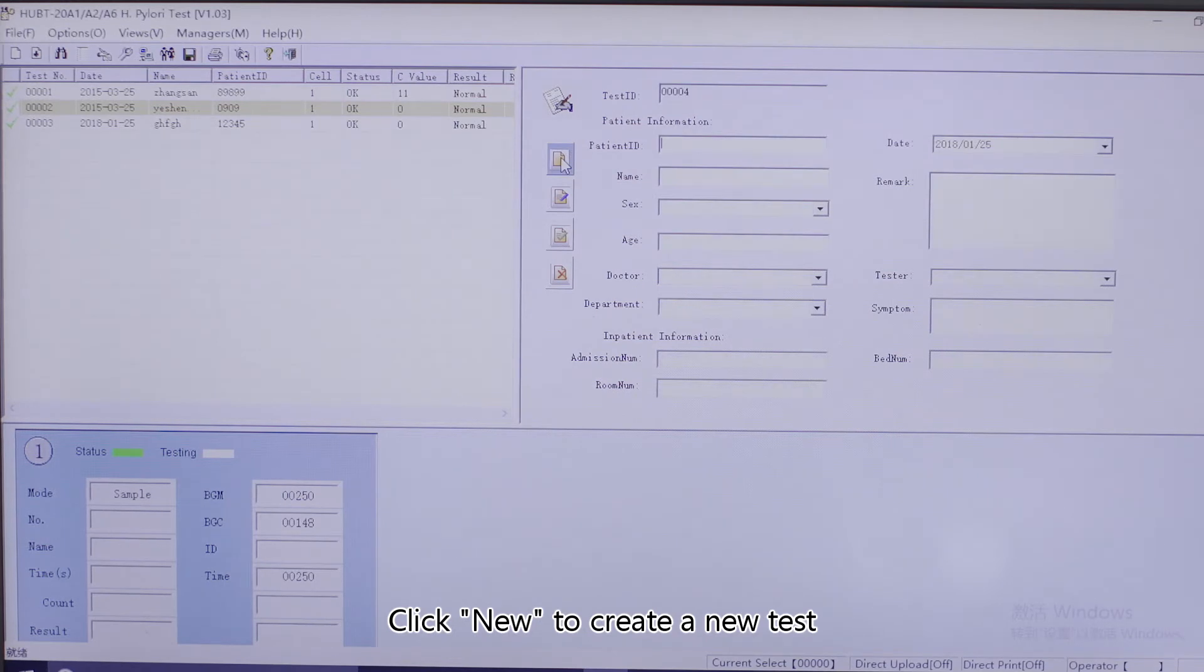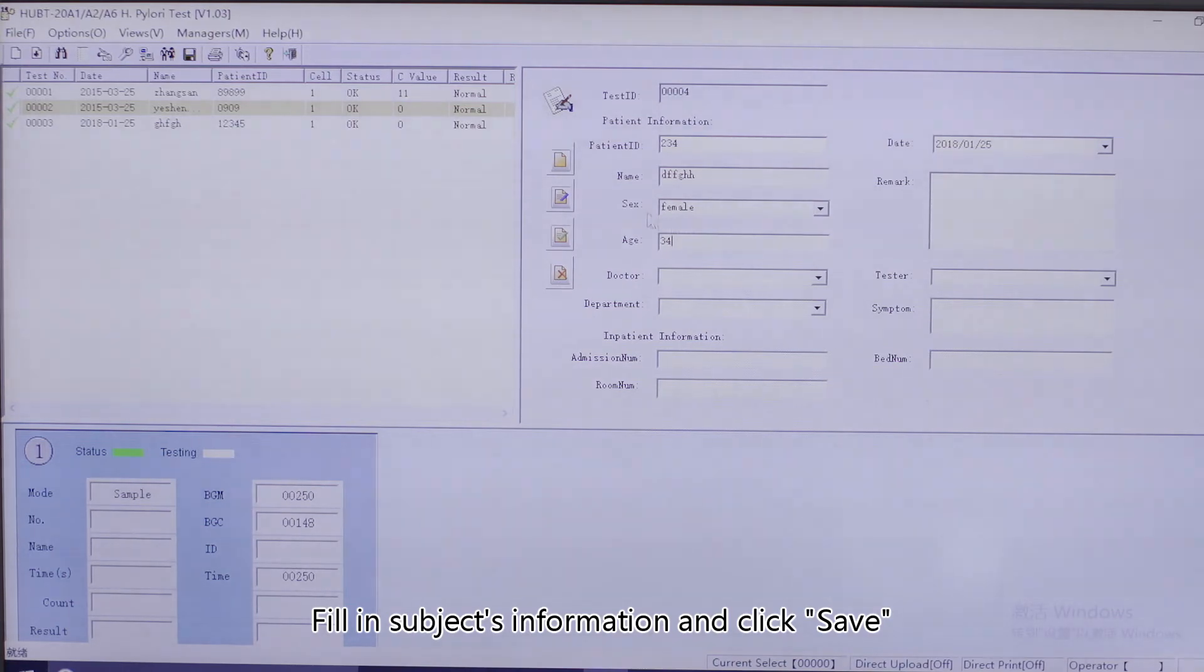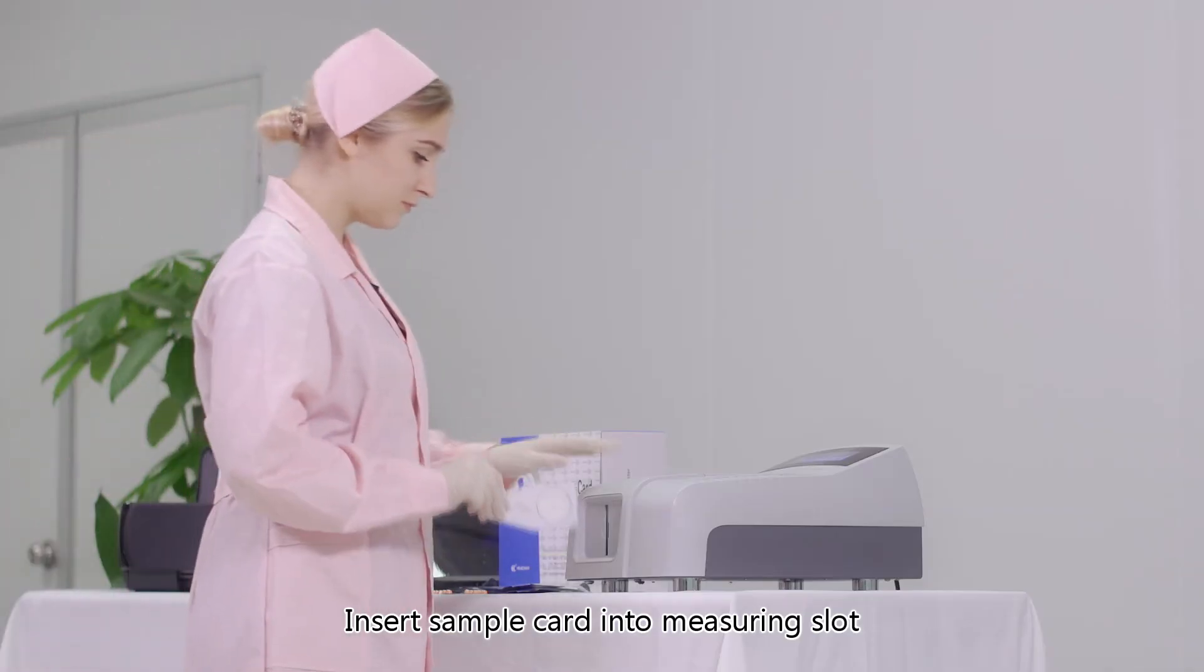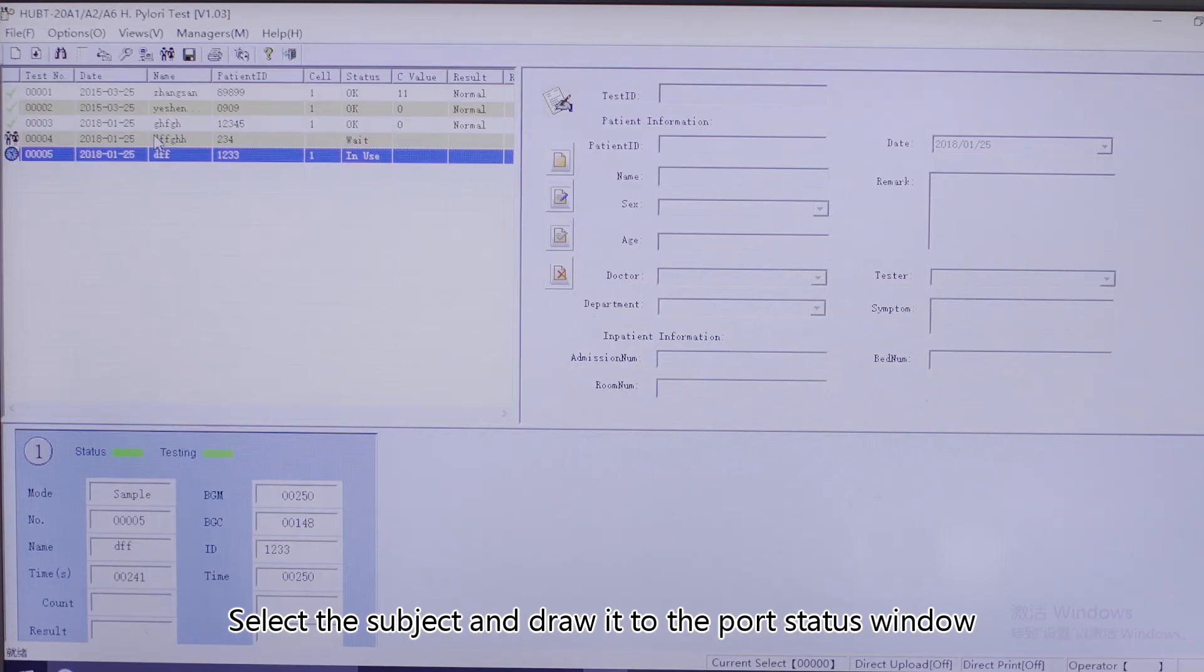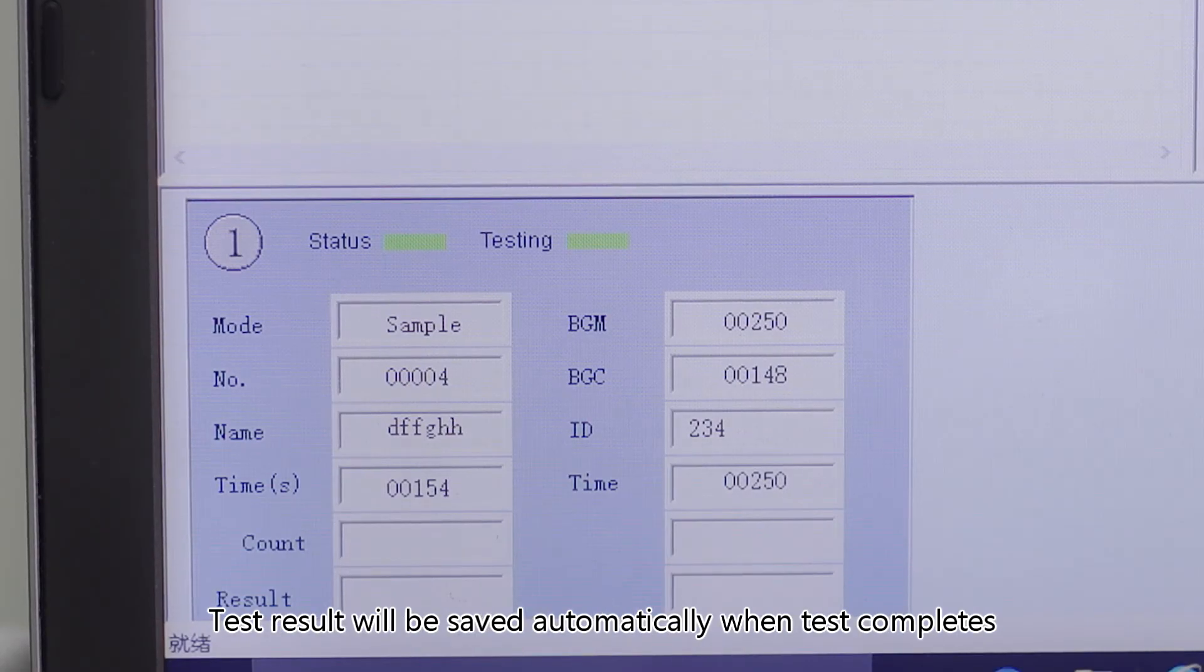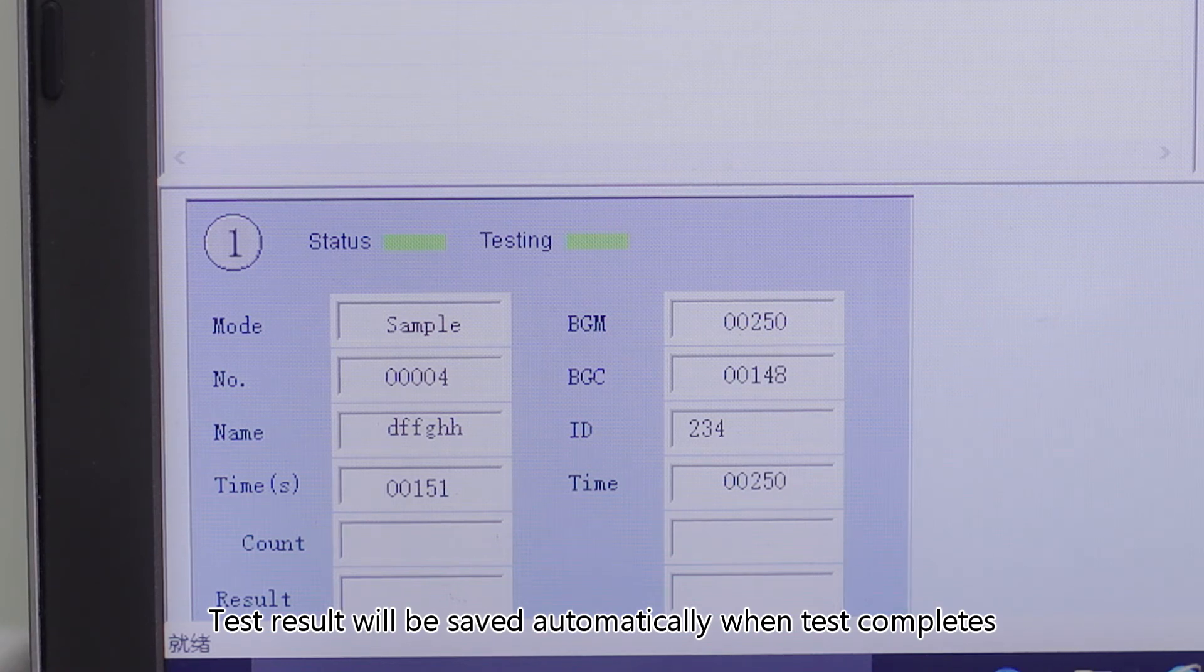Click 'New' to create a new test. Fill in the subject's information and click 'Save'. Insert the sample card into the measuring slot. Select the subject and drag it to the port status window. Test results will be saved automatically when the test completes.